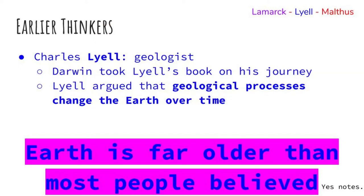Charles Lyell was a geologist — Darwin actually took Lyell's book with him on his journey on the HMS Beagle. Lyell argued that geological processes changed the earth over time, and he believed that the earth is far older than most people believed, which was a huge difference. Remember that these fellows are working in the early 1800s, and most people at the time believed the world to be around 6,000 years old due to early biblical tales. During this time, people were also open to discussing these stories and began to accept new calculations, using stories from the Bible, like the flood, as an example of early records where the earth's surface changed significantly.